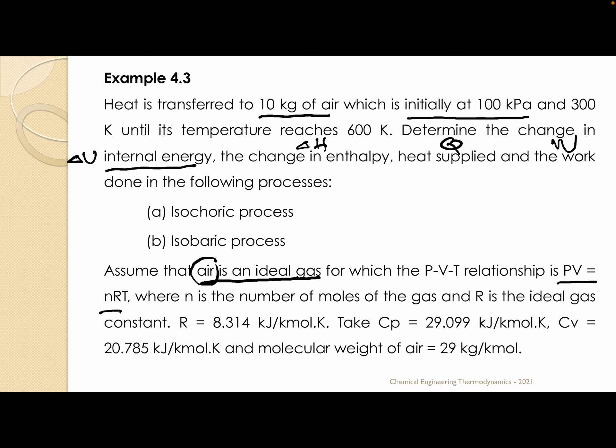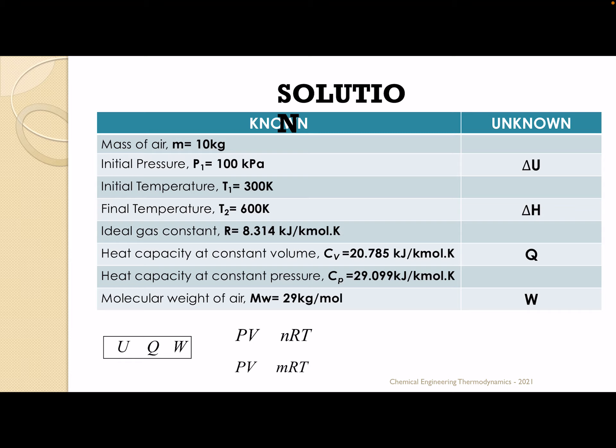It is critical for us to look at N here, because if you look at our R value, you see it's per kilomole. N is the number of moles, so it's critical to look at that. If you look at your CP value as well, you see it's per kilomole. We said that it's essential we have consistency of units.